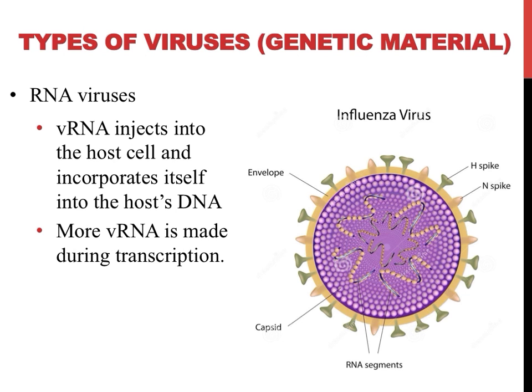Just like DNA viruses, RNA viruses can be single or double-stranded. One example of an RNA virus is the influenza virus, exhibited on the right. Single-stranded viruses are much more prone to mutation, as there is no complement to spell check what's being copied. As a result, you need to be vaccinated against such viruses, like influenza, every year, and even then it's not completely effective against all forms of influenza.